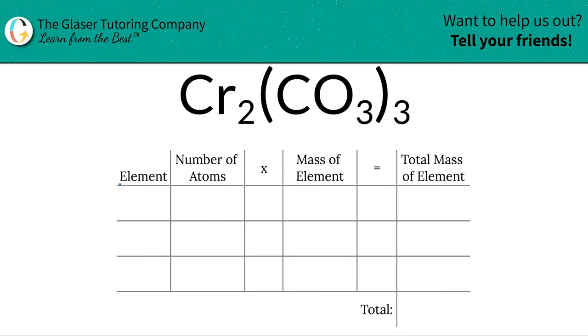So the first thing I'm going to do is write down the elements I see in the compound. We see chromium, we see carbon, and we see oxygen.